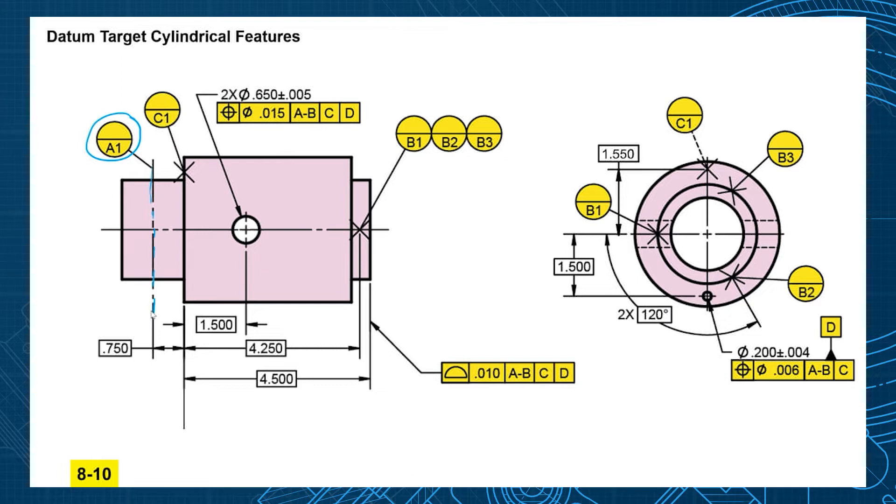It's only a circular cross-section that you're going across that cylindrical feature, and that's going to be at this basic dimension of 750. So that's going to create a center point, the makings of an axis.